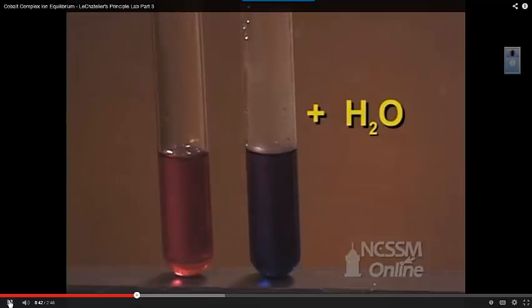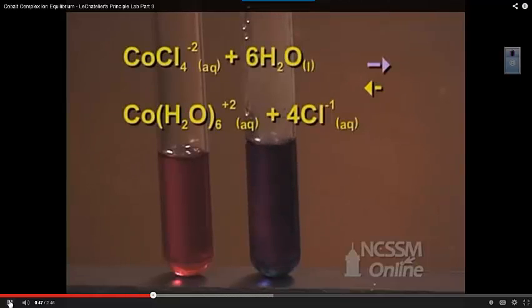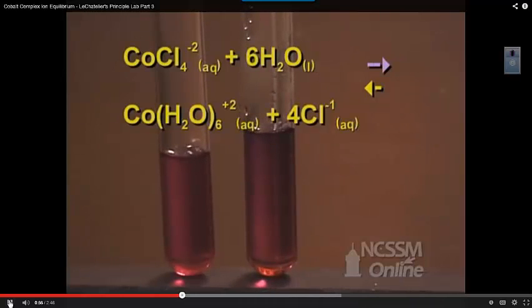Starting back with the two test tubes — the one on the left is for comparison, and the one on the right just had additional chloride added, so it's blue. We add water to the test tube. We notice that the solution has turned back to pink. By adding water to the solution, we've shifted the equilibrium back in the forward direction. The water being added causes it to shift to the right, making more of the cobalt water complex, which is pink — shifting to the right to use up that excess water.